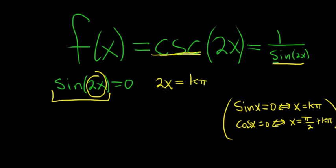To finish, you just divide by 2. So x is equal to k pi over 2, where k is an integer.